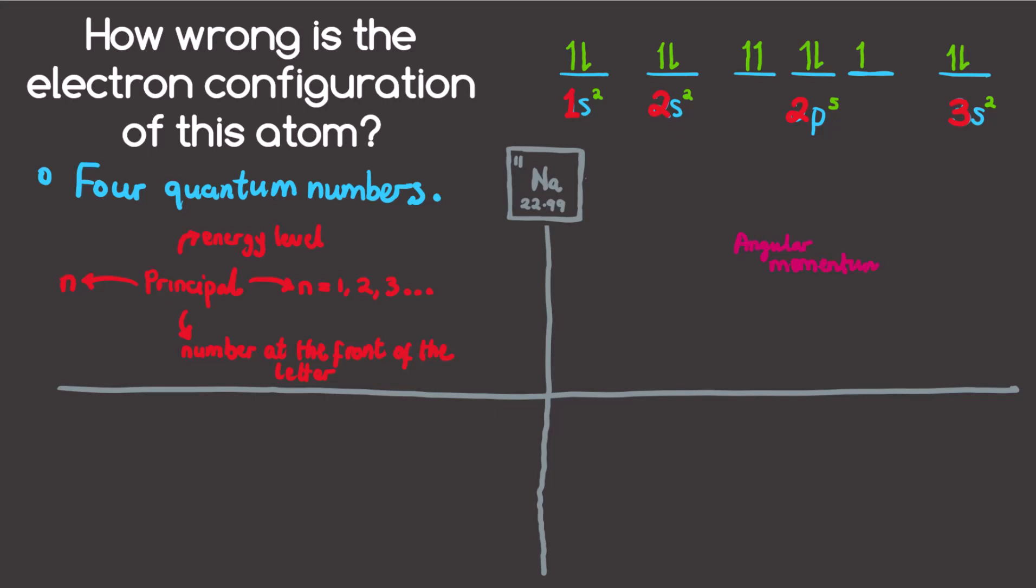Next is the angular momentum quantum number, notated as l. This reflects the orbital shape and can also be called sub level or sub shells. l is in the range of zero to n minus one. On the electron configuration, these are represented as letters where l equals zero is spherical, which represents s, and one for l equals p lobes orbitals.